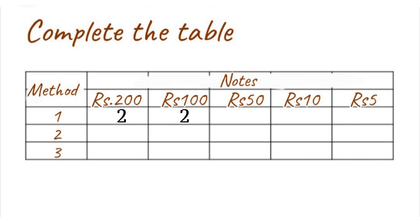Complete the table by splitting Rs. 600 in 3 methods. Method 1: 2 × 200 rupee notes, 2 × 100 rupee notes. Method 2: 1 × 300 rupee note, 6 × 50 rupee notes. Method 3: 1 × 200 rupee note, 1 × 100 rupee note, 4 × 50 rupee notes, 9 × 10 rupee notes, and 2 × 5 rupee notes.